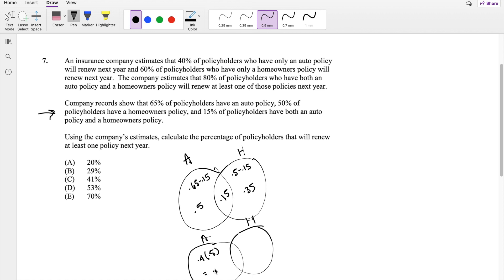And they're saying here that 60% of only homeowners, so 60% times 0.35 will renew, so that's 0.21.